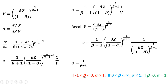If beta is greater than minus 1 but less than 0, the elasticity of substitution will exceed 1. If beta is greater than 0 but less than infinity, the elasticity of substitution will be less than 1. And if beta equals 0, the elasticity of substitution will exactly equal 1. That's it — I hope you found this video helpful.